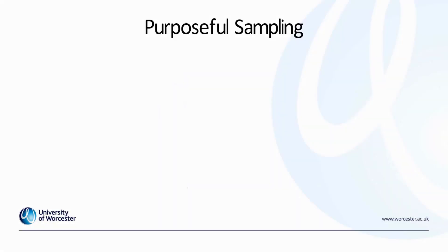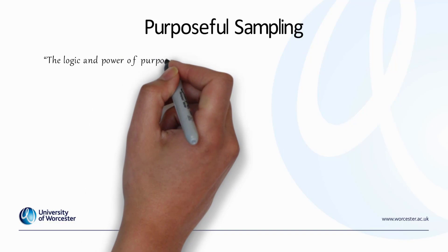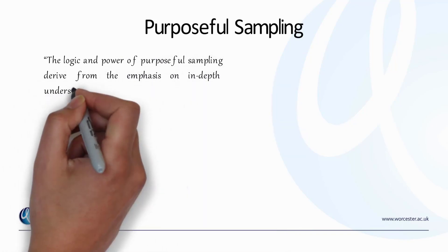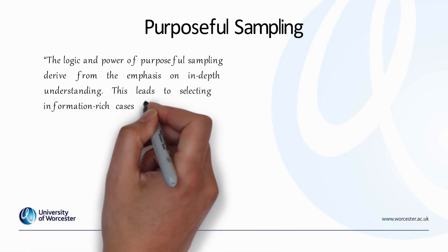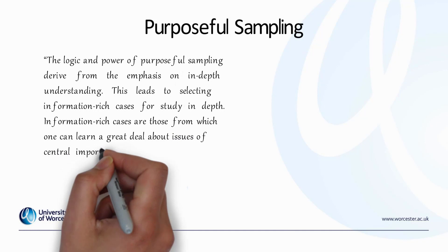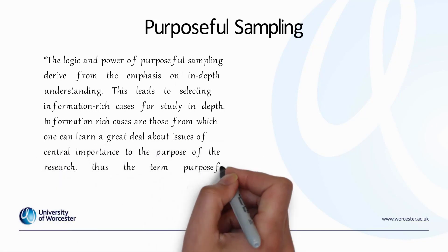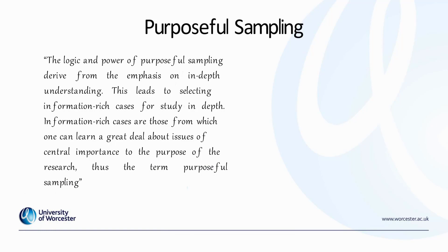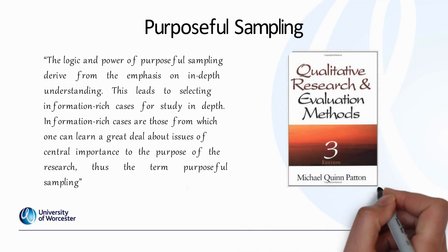On the other hand, non-probability sampling, often called purposeful sampling particularly by qualitative researchers, seeks to do something different. The logic and power of purposeful sampling derive from the emphasis on in-depth understanding, leading to selecting information-rich cases for study in-depth. Information-rich cases are those from which one can learn a great deal about the issues of central importance to the purpose of the research. So we are deliberately and purposefully selecting members who can give us the most information to help achieve the goals of our research, meet our research aim, and answer our research questions.